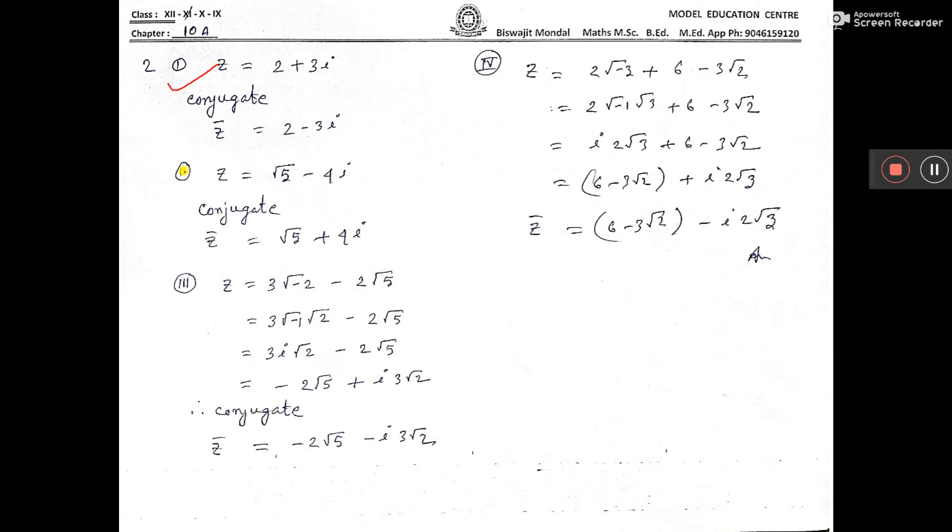Now, this is done. This sum here, before i minus sign, so it will be plus. So this is z bar, that means conjugate of z.